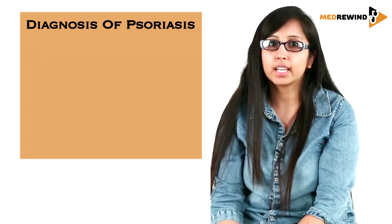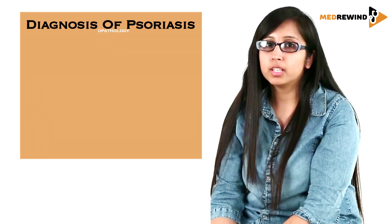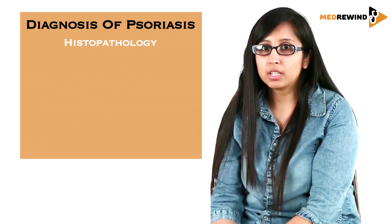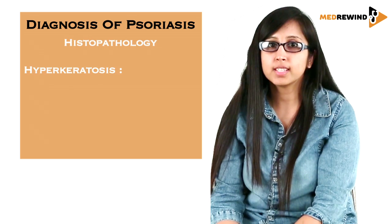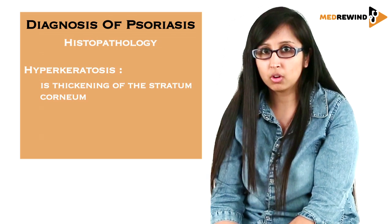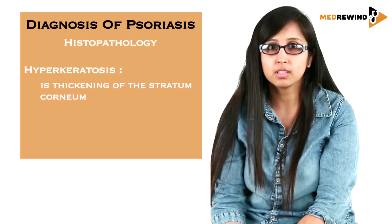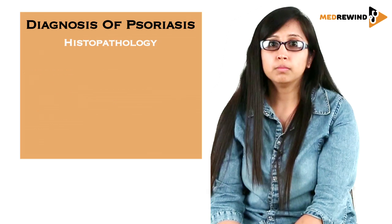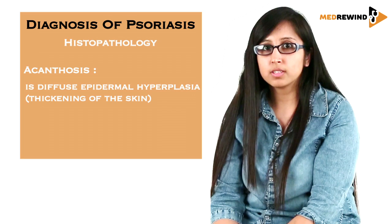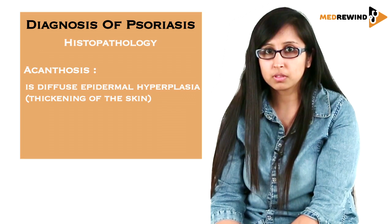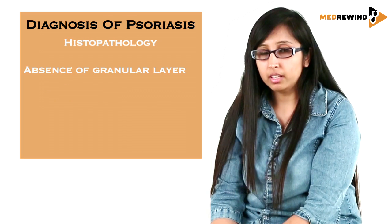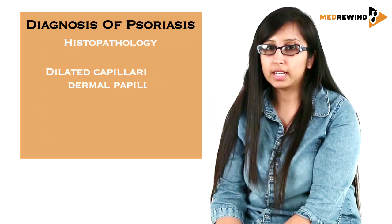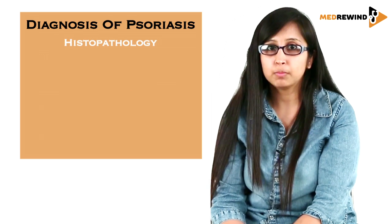The diagnosis of psoriasis is based on clinical characteristics and skin biopsy or histopathology. Starting from the epidermis downward: the first feature is an increase in the thickness of the stratum corneum, known as hyperkeratosis. Presence of nuclei in the stratum corneum is known as parakeratosis. Increase in the stratum spinosum layer appears as regular acanthosis, with loss of the granular layer.